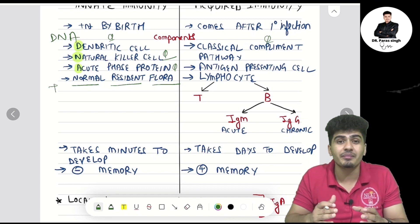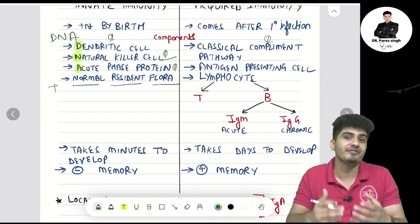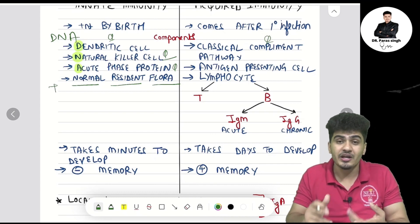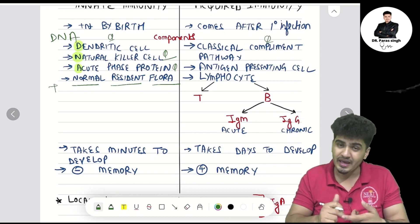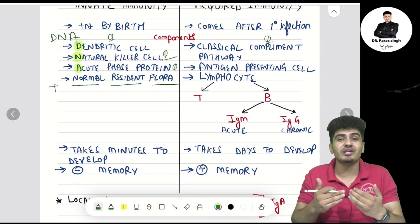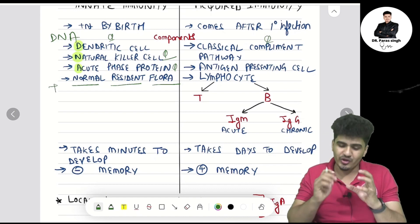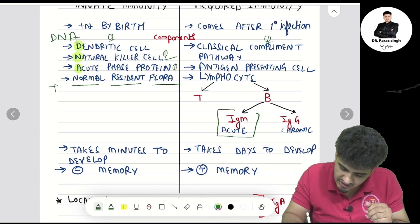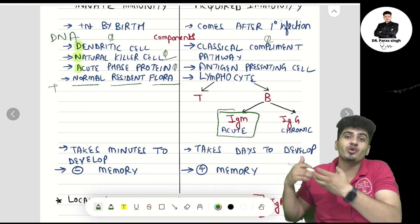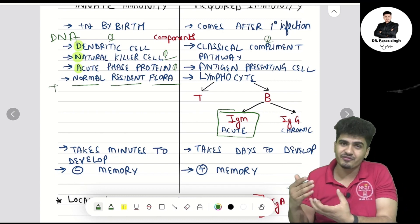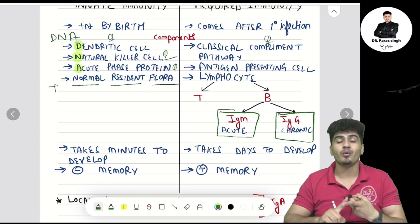B lymphocytes activate two antibodies: IgM and IgG. Remember IgM with the mother — your mother is the first encounter in your life — so IgM is the first antibody to be synthesized and is the marker of acute infection.